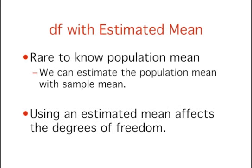It is pretty rare that we know the population mean when we are estimating the variance. Instead, we have to first estimate the population mean with the sample mean. The process of estimating the mean affects our degrees of freedom.